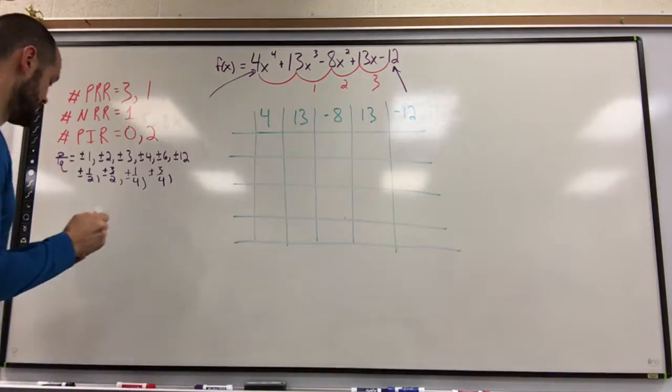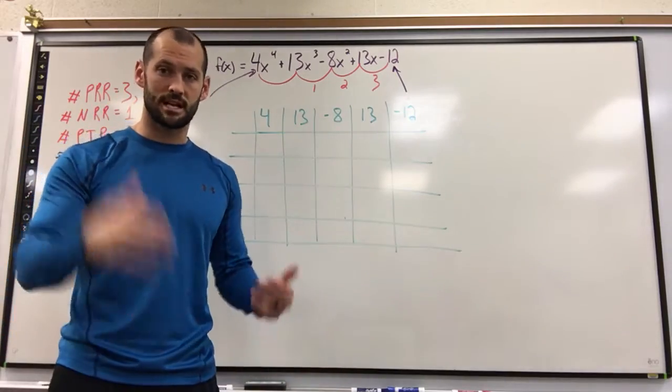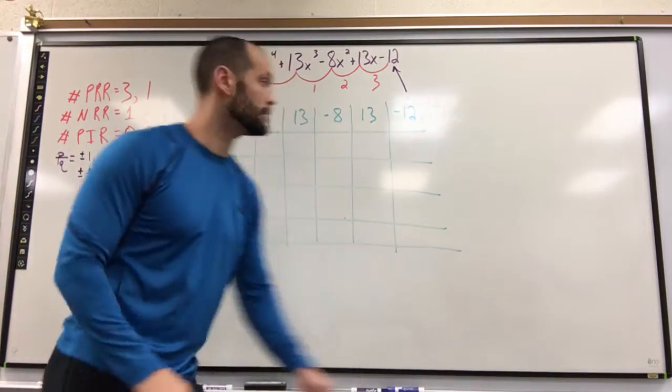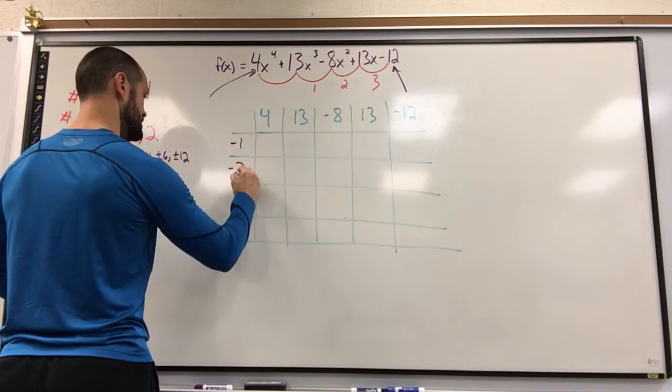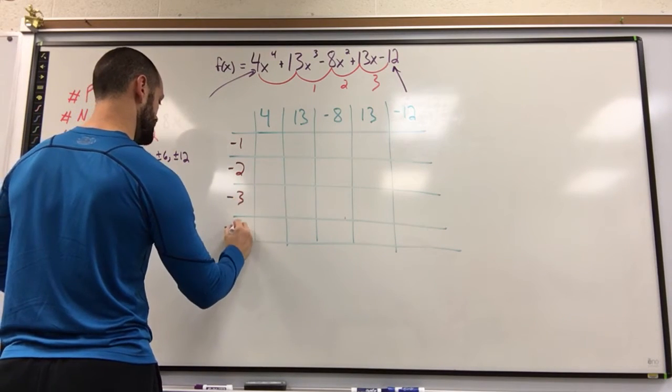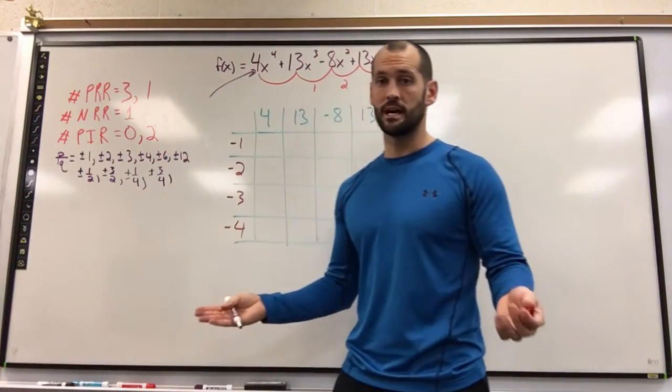Now I'm going to be dividing them by my possible roots. So I'm going to start with the most basic. Again, remember I'm trying negatives. I'm trying negatives because I know I'm guaranteeing at least one negative real root. So I'll try negative 1, negative 2, negative 3, negative 4. Hopefully if one of these hit, I'm done.